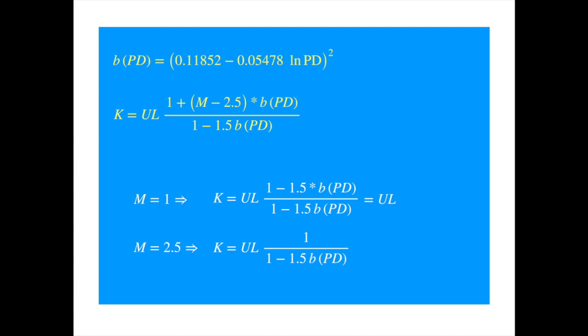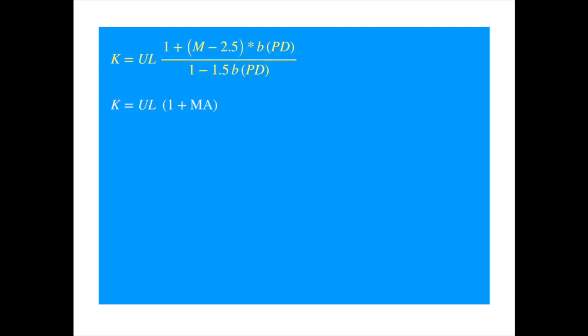Let's ignore the term in the denominator for now, because we already know how it comes about. And we can write the maturity adjustment as follows.